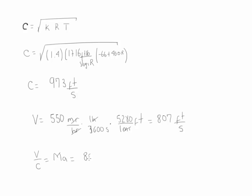This value is going to be 807 feet per second divided by 973 feet per second. And this is going to be equal to 0.829.